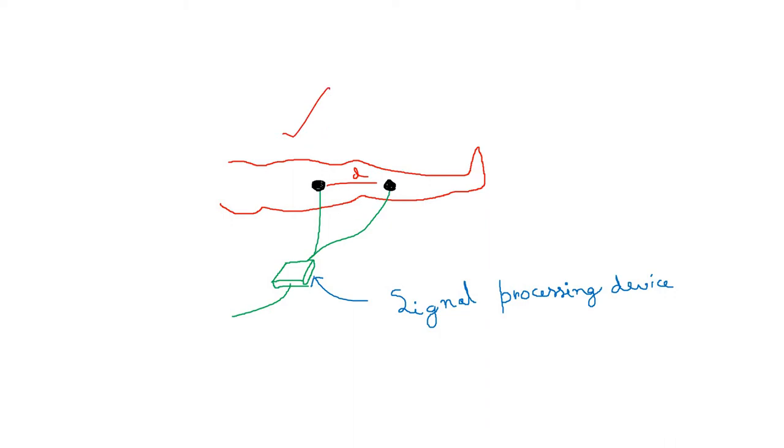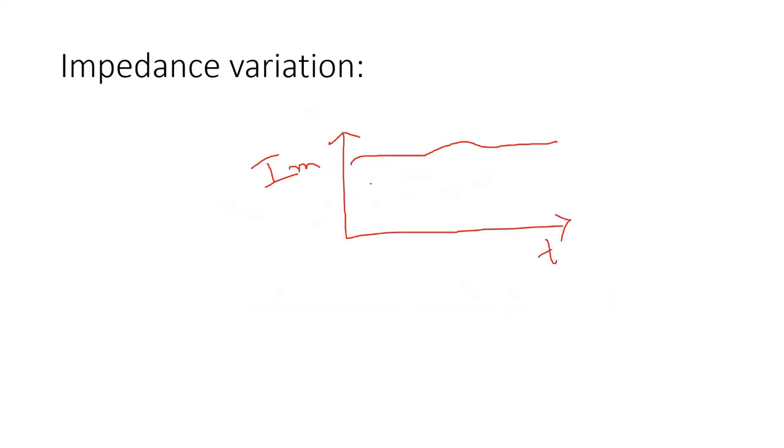Bio means it is related to body. Sensor means it is measuring something and converting the data into electrical signal. The amount of change in the blood flow through the blood vessels is basically converted into impedance characteristics. And why impedance? Because it is using the impedance property of the body.